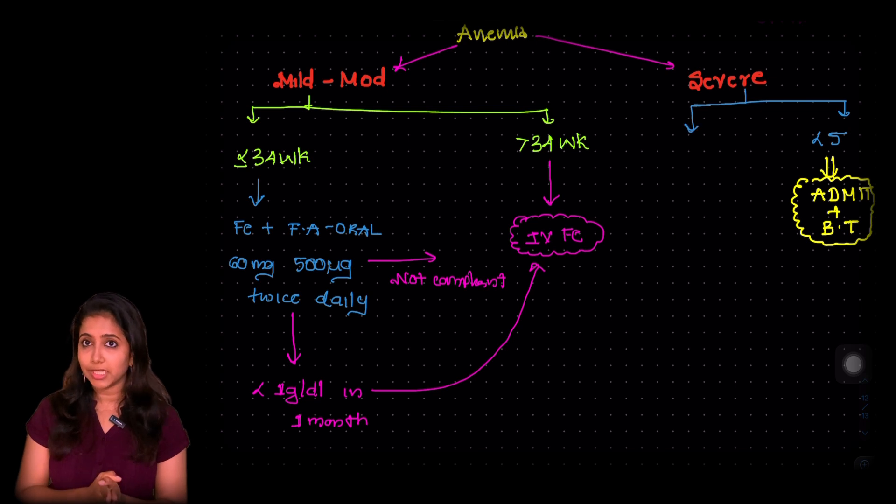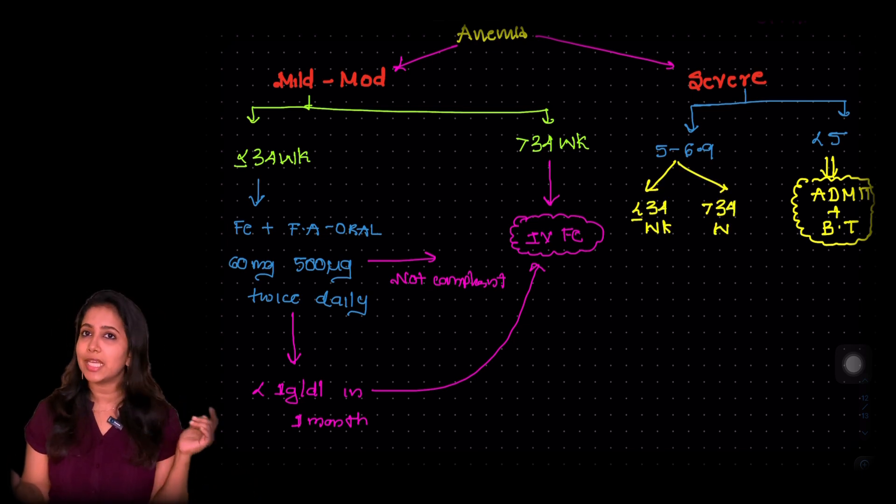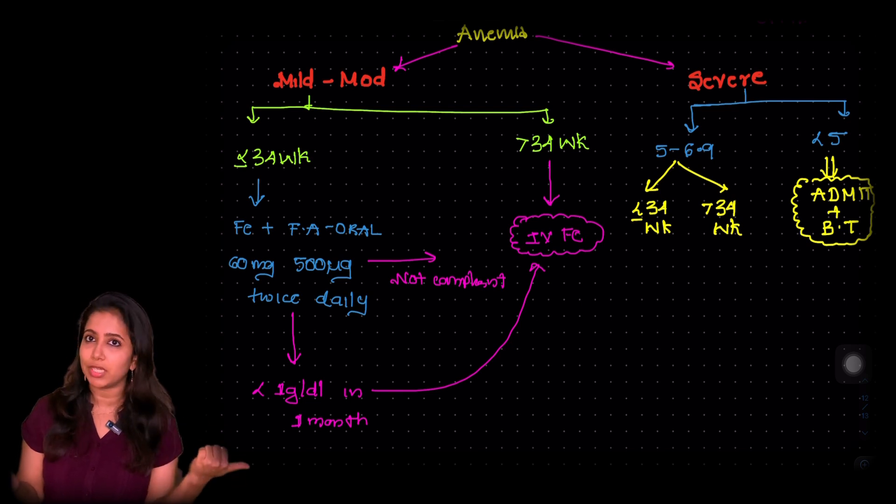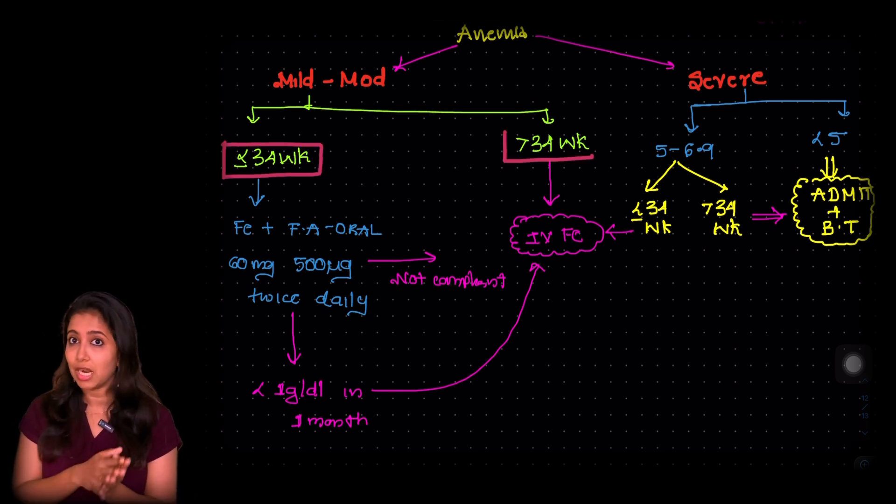So the next thing is when she is between 5 to 6.9, we divide them as less than or equal to 34 weeks or more than 34 weeks. Less than or equal to 34 weeks, go with IV iron. If she is more than 34 weeks, go with blood transfusion. So I hope that simplifies any question that is going to come regarding this scenario.